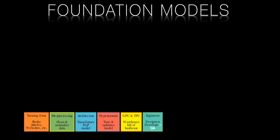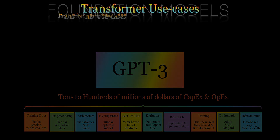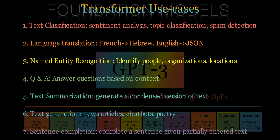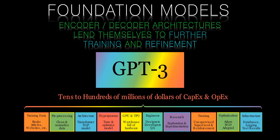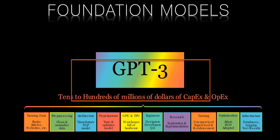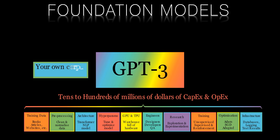Foundation models are large pre-trained AI models that have been trained on a massive amount of data to generate high quality natural language representations. These models are designed to perform basic NLP tasks such as sentiment analysis, text classification, and machine translation, and are often used as a starting point for more advanced AI applications. The importance of foundation models lies in their ability to provide a solid base for building new AI applications. By using pre-trained models, developers can avoid the time and computational resources required to train models from scratch and instead focus on fine-tuning the model to their specific use case.